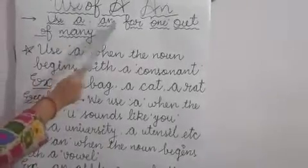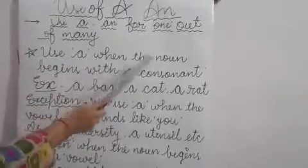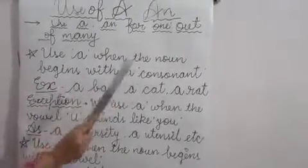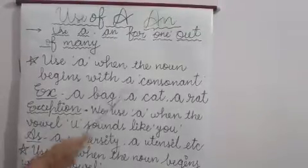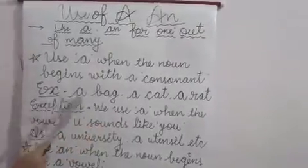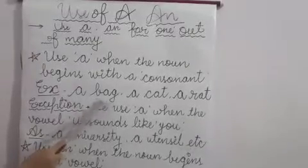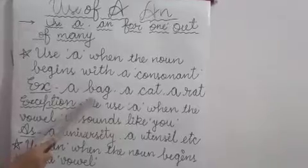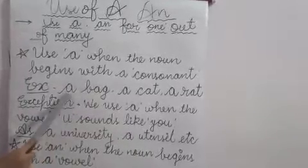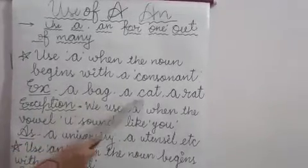We use 'a' when the noun begins with a consonant. Example: a bag. The first letter of bag is B, and B is a consonant. That's why we use 'a' here. A cat.